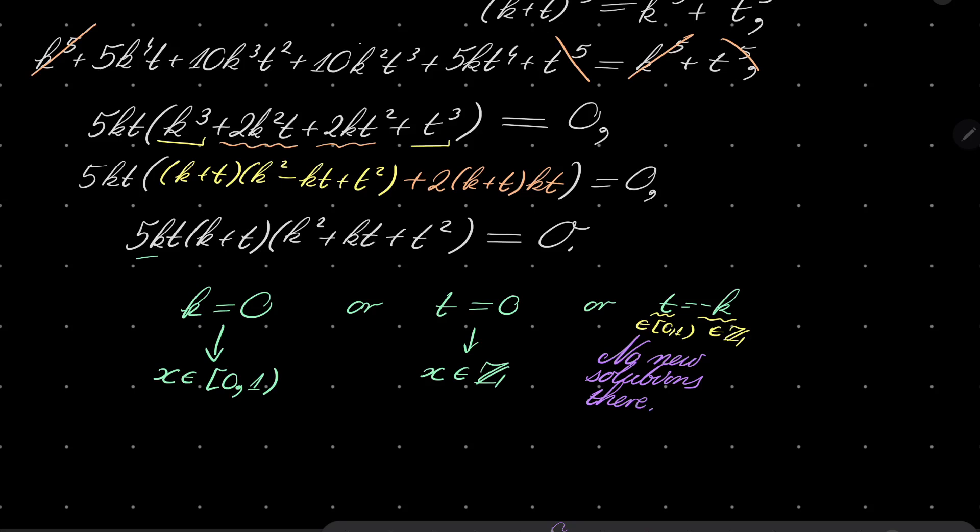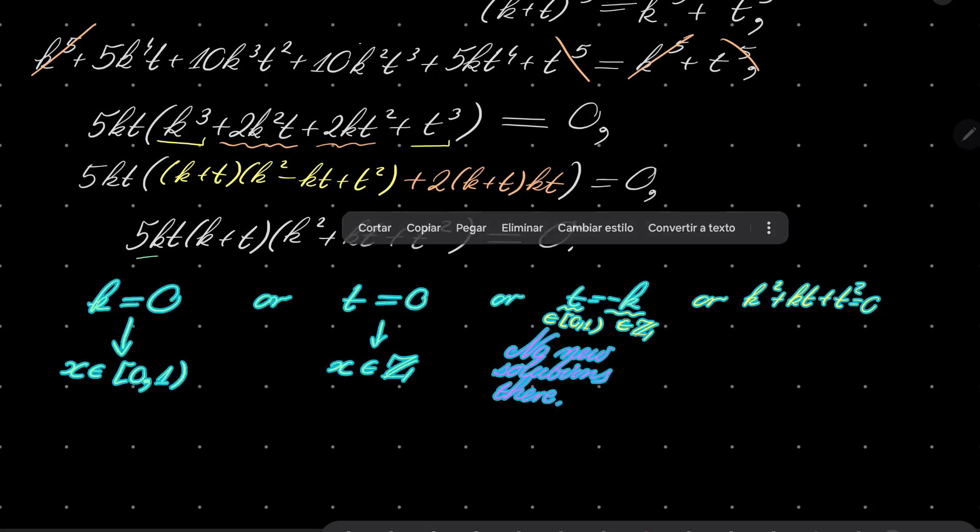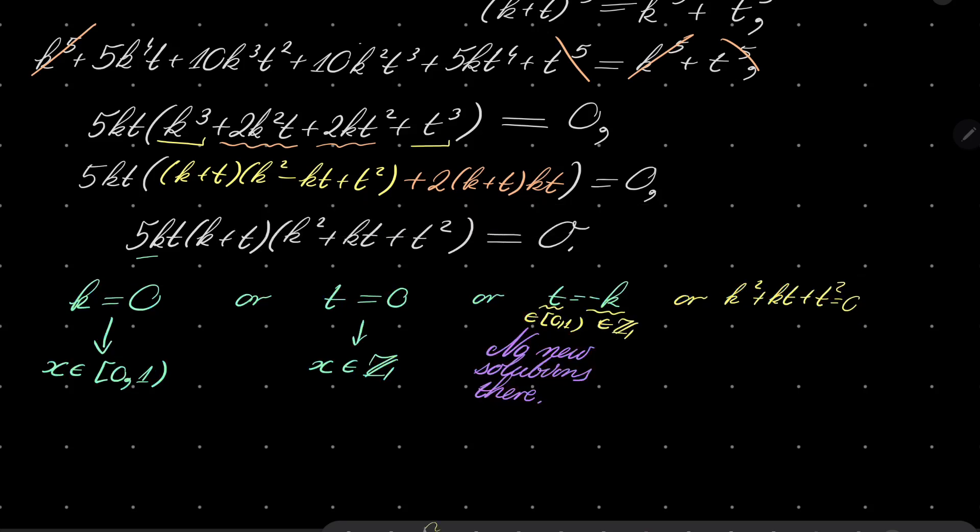Or, the last possibility, or k squared plus kt plus t squared equals 0. So, right, let's tackle the last part.